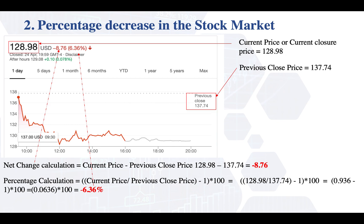Now, if you want to validate our calculation — to understand how to get this value of $128.98 — we just need to multiply the previous close times (1 minus this value). So if you do (1 minus 0.0636) times this value, we are going to get exactly that result.